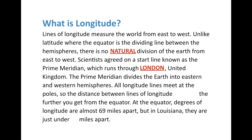Anything east of Greenwich — zero degrees longitude — is in the eastern hemisphere. Anything west is the western hemisphere. Now, all longitude lines meet at the poles. So unlike lines of latitude, lines of longitude are not the same distance. In fact, lines of longitude shrink from the equator until they get to zero at the poles where they all meet.